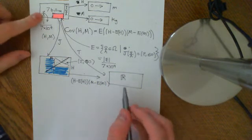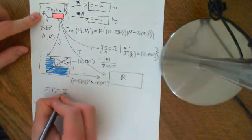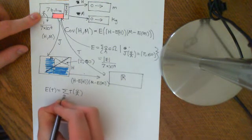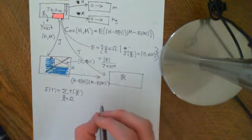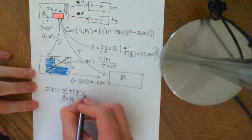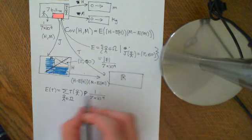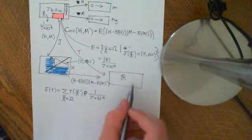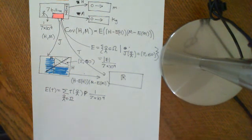To calculate the expected value of T, we sum over every possible person their value of T times the probability of that person, which is 1 over 7 times 10 to the 9. So we're effectively adding up this value for every single person and dividing by the number of people — we're taking the mean. We'll cut it there and continue this discussion in the next video.